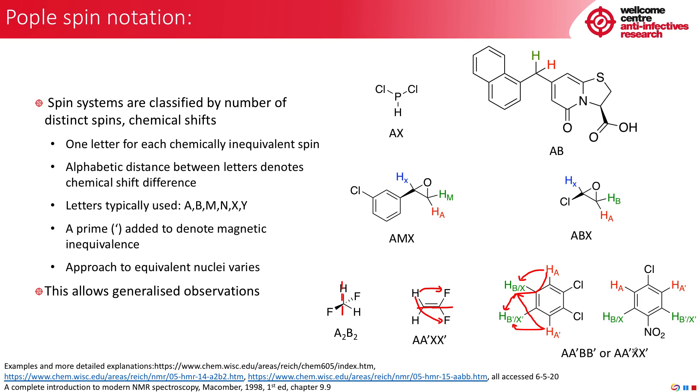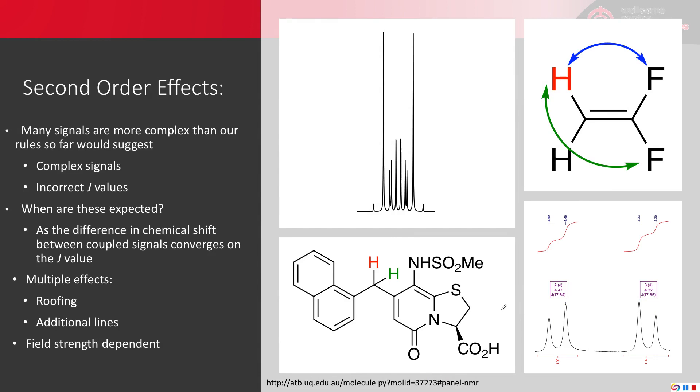So our magnetically inequivalent nuclei are chemically equivalent. We have identical shifts and patterns, and they're going to be on top of each other. Is this distinction more than pedantry? Unfortunately, yes, it is. Because these nuclei are not identical, they can couple to one another. This causes something called second order effects. So you will observe that many signals are more complex than the rules we've seen so far. We see complex signals and incorrect J values like the aromatic we started with.